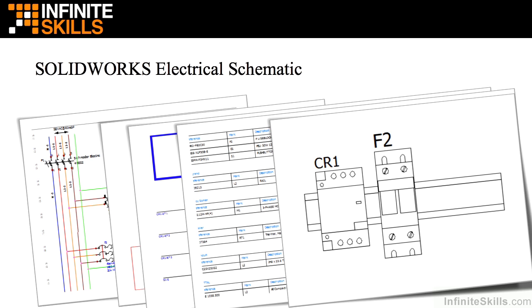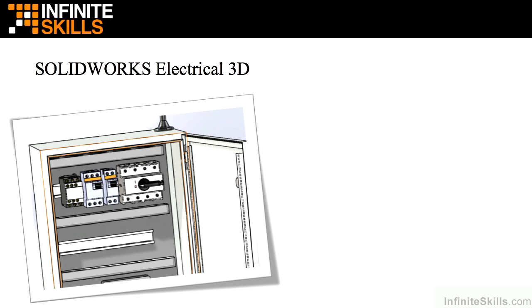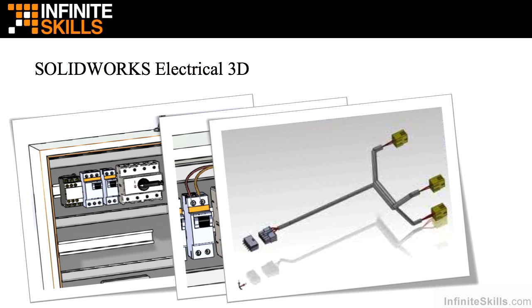Also generated can be 2D panel layout drawings that are connected to the symbols that were placed on the schematic. SOLIDWORKS Electrical 3D runs as an add-in to the SOLIDWORKS Mechanical Design Software. It is connected to the database on the schematic software and gives you the ability to create 3D panel layouts, as well as 3D wiring, cable and harness designs, and flattened nailboard drawings for manufacture.